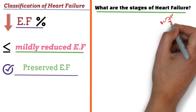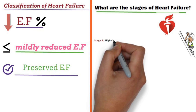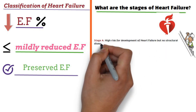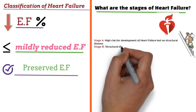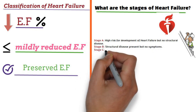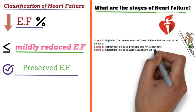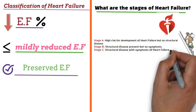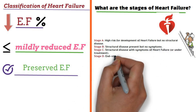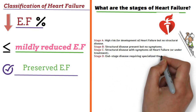American Heart Association stages include the following: Stage A — high risk for development of heart failure but no structural disease. Stage B — structural disease present but no symptoms. Stage C — structural disease with symptoms of heart failure or under treatment. Stage D — end-stage disease requiring specialized therapies.